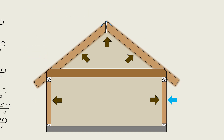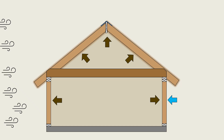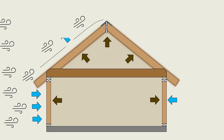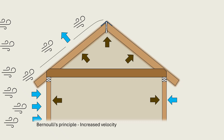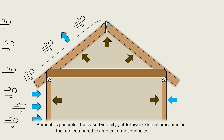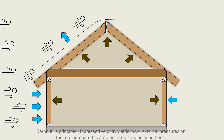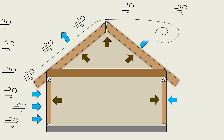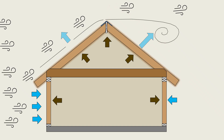When wind begins to blow, the pressure environment around the building changes. The oncoming wind first stagnates against the windward wall, producing positive pressure. A portion of this flow is deflected upward and accelerates over the roof as it follows the sloping surface. According to Bernoulli's principle, this increased velocity yields lower external pressures on the roof compared to ambient atmospheric conditions. As the wind accelerates over the windward slope and crosses the ridge, the flow separates from the roof surface due to the abrupt change in direction, forming a turbulent wake region with vortices and recirculating eddies. This separation creates a zone of persistently low pressure or suction, causing uplift demands on the roof framing even before considering internal pressures.